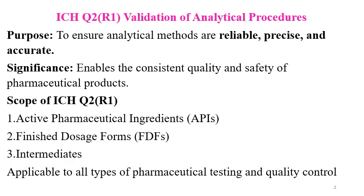The scope of ICH Guideline Q2 R1 covers active ingredients, APIs, drug substances, finished formulations, and intermediates. It is applicable to all types of pharmaceutical testing and quality control.